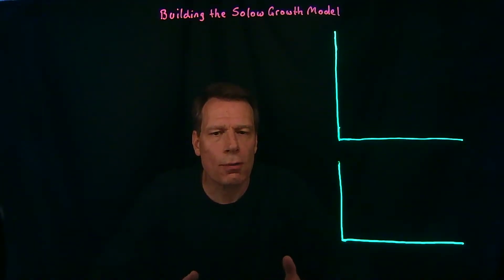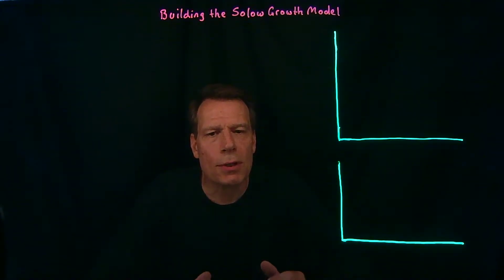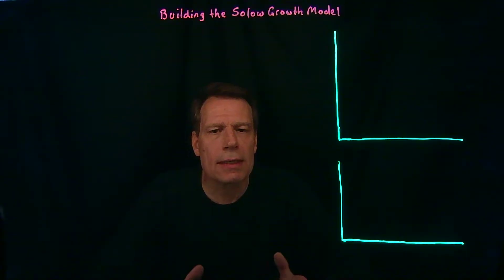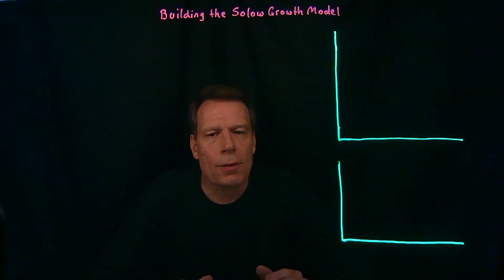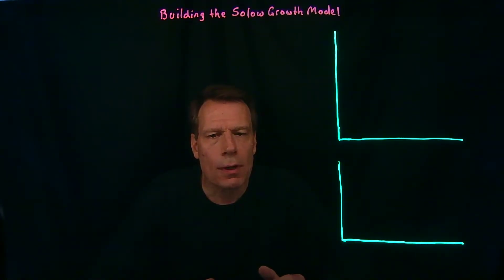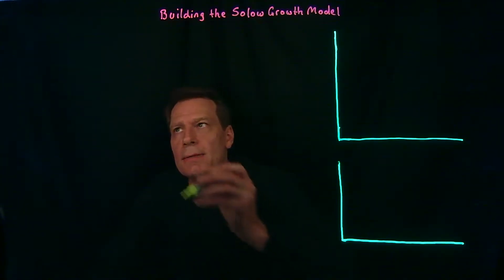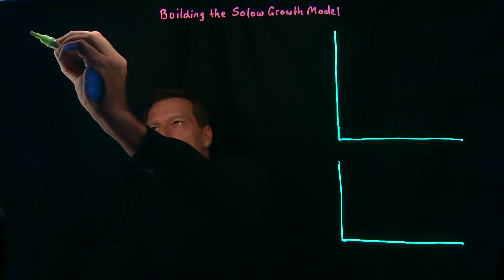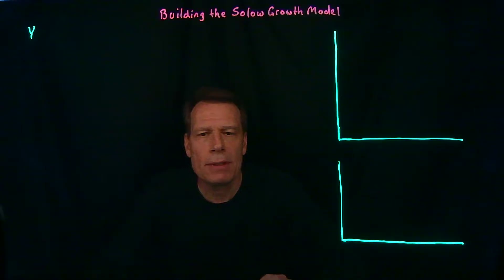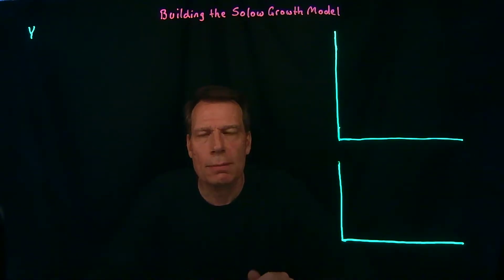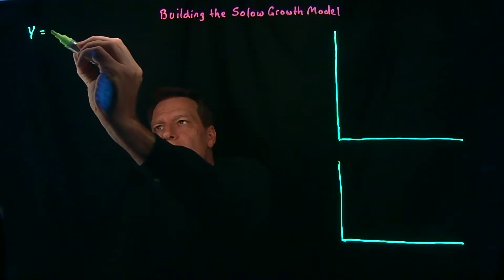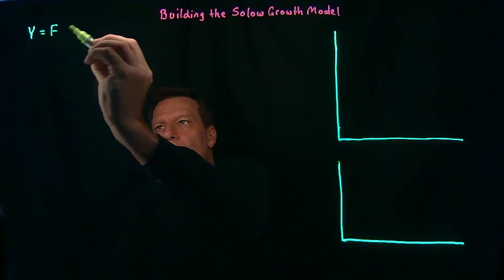Now we're going to turn to the long run, and the main concern in the long run is economic growth. To answer questions about economic growth, we first have to build a new model. In this model, GDP — and by GDP here we mean the natural level of GDP — is a function of a number of variables.